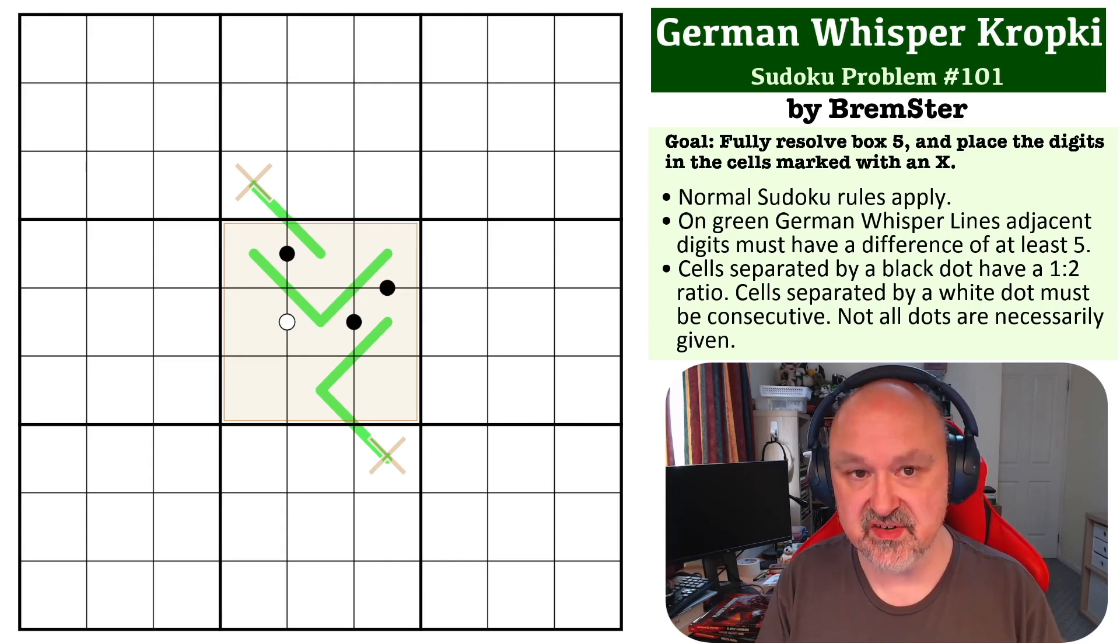The way the rules work is: on German Whisper lines, adjacent digits must have a difference of at least 5. The Kropki rules are: cells separated by a white dot must be consecutive, and cells separated by a black dot must be in a 1-to-2 relationship.